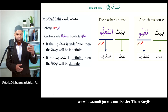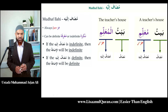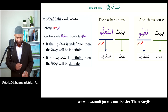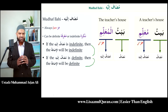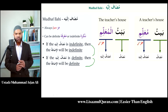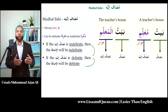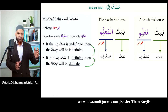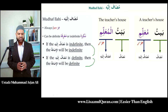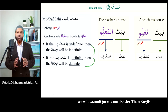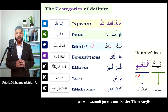Please note: if the mudaf ilaihi is indefinite, you translate the whole construct as indefinite — 'a teacher's house.' If the mudaf ilaihi is definite — because it has al — you translate the whole construct as definite — 'the teacher's house.' The mudaf cannot take al or tanween itself, so you cannot say al-baytu in the definite version; definiteness comes from the mudaf ilaihi. This is very, very important.